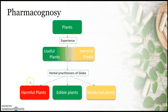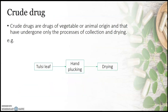These herbal practitioners further categorized plants as poisonous plants, edible plants (nutritional plants), and medicinal plants — plants which have the ability to cure diseases. With their experiences, they developed their own principles, which later resulted in the development of alternative systems of medicine across the globe.